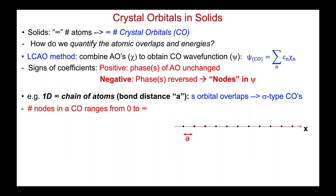We'll define the atomic separation between two atoms as a, and we'll begin by looking at s orbital overlaps, which in turn will form sigma-type crystal orbitals. Given I have an infinite number of atoms, I'm going to have an infinite number of crystal orbitals, and the number of nodes can range from zero in the most stable crystal orbital where everything is interfering in phase, to an orbital where there's an essentially infinite number of nodes.